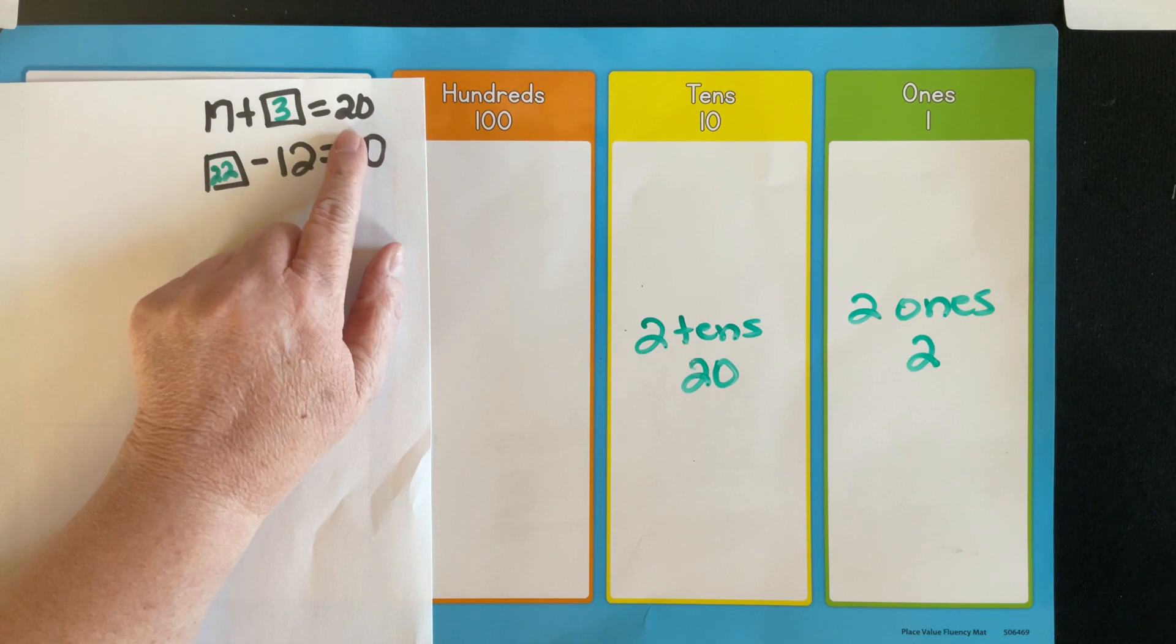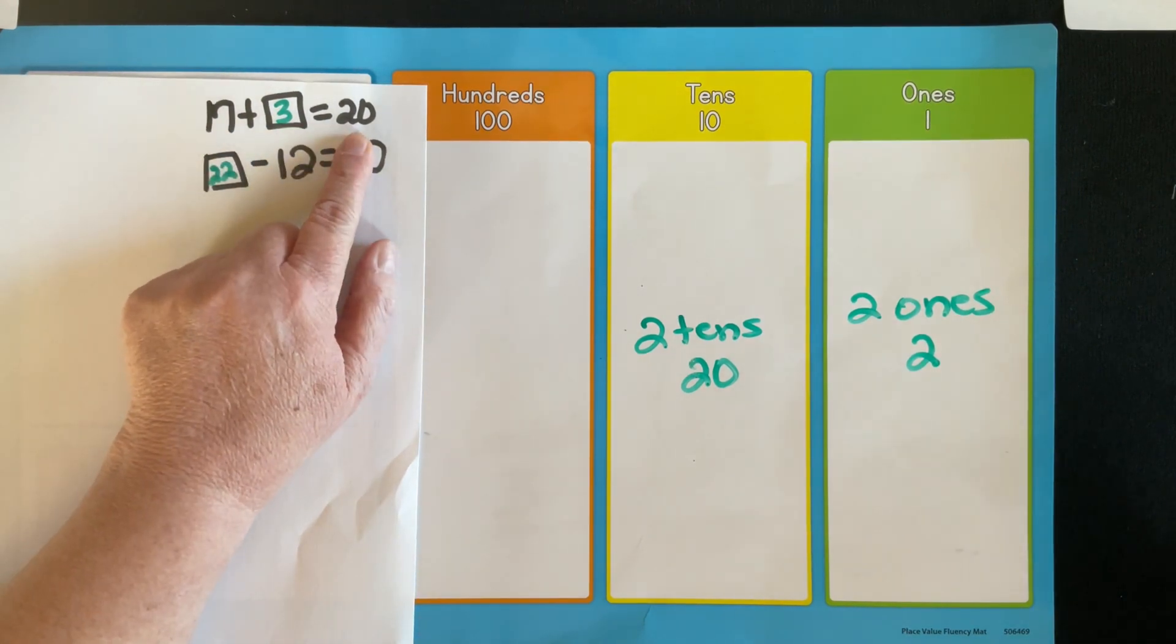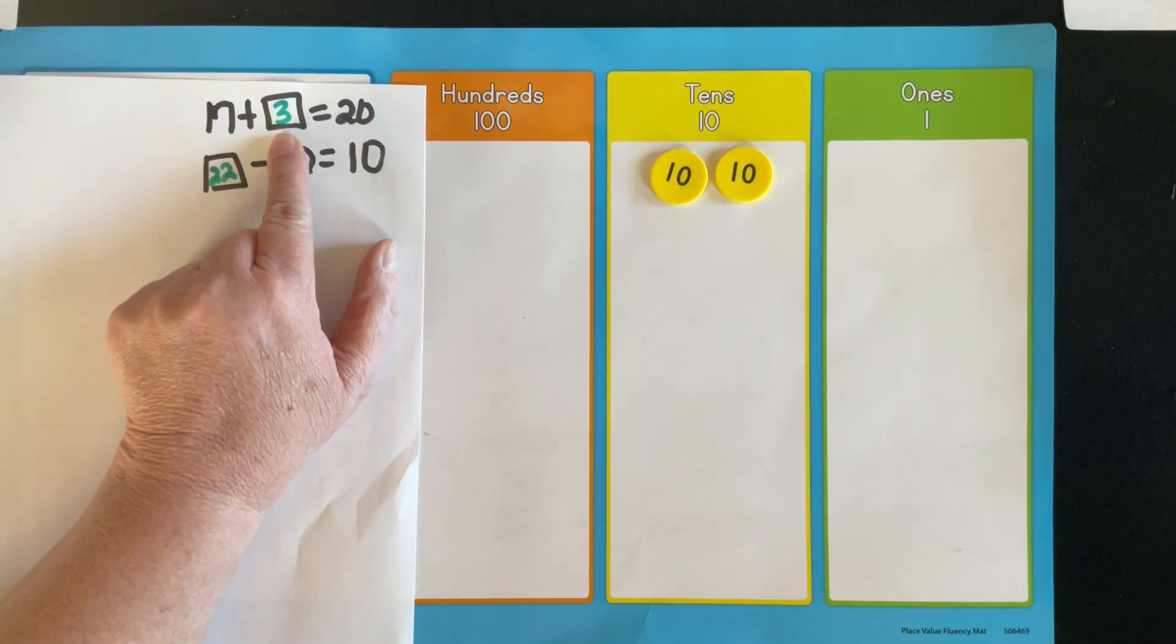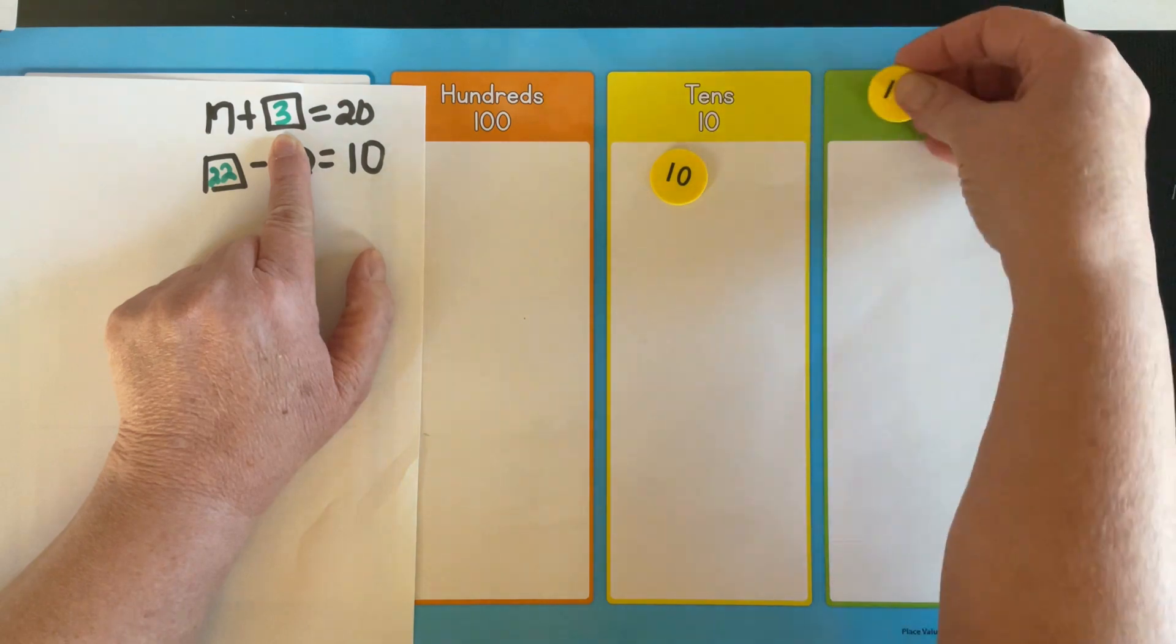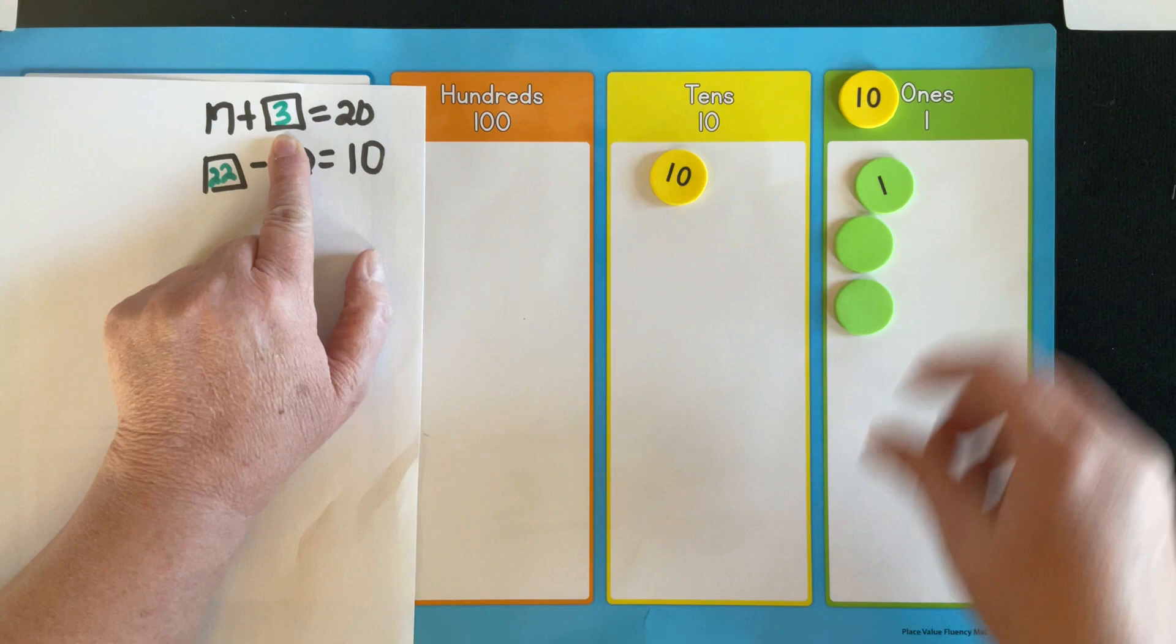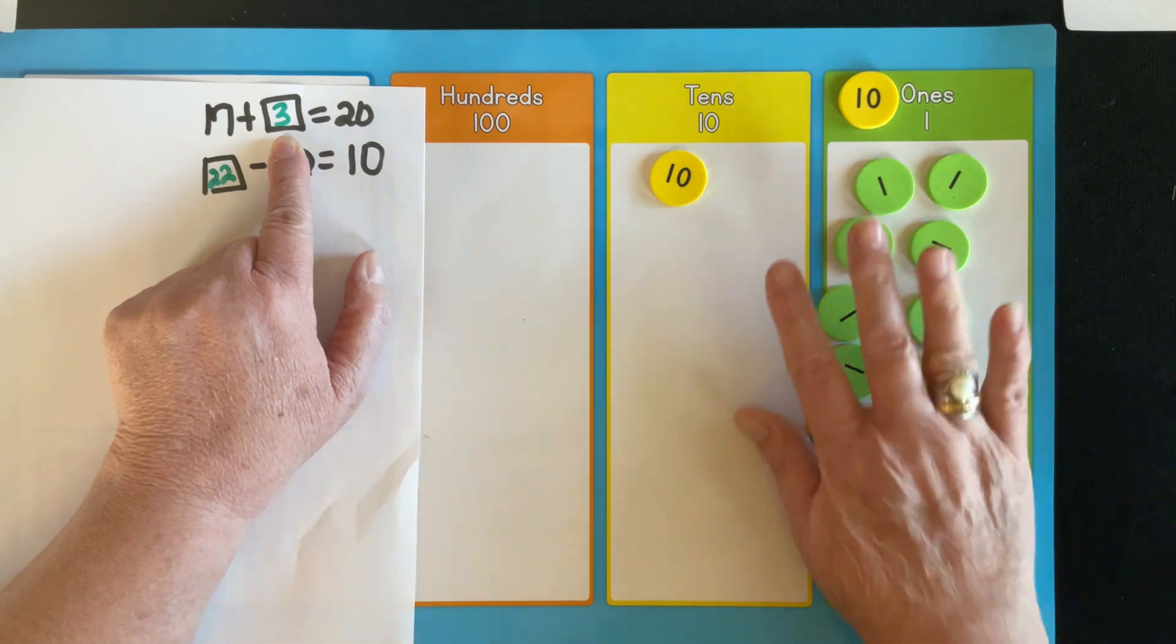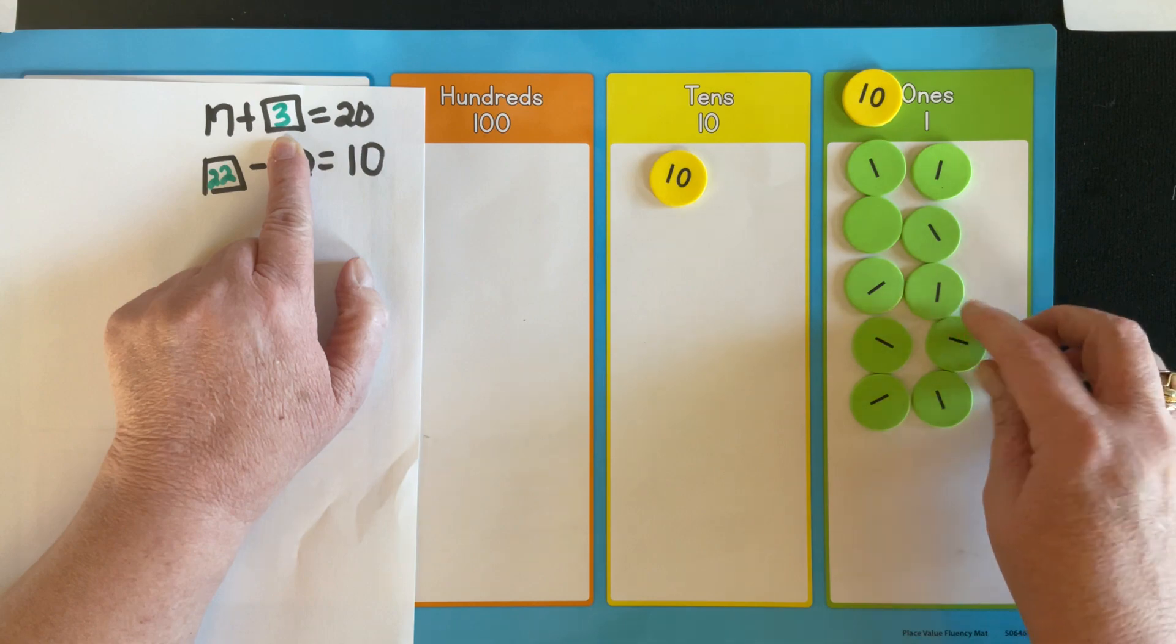Likewise, on this first problem, we could say, well if 17 plus 3 was 20, that means if I started with 20, and I took away 3, then you go, well I don't have 3 to take away. Well let's move this 10 and exchange it for 10 ones, which I'm going to set that up as a 10 frame. And hopefully by now kids know 5 and 5 is 10, and so they'll probably be able to do this really quickly. And now I can remove 3.